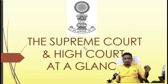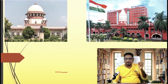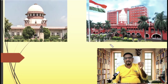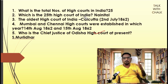As you can see the headline: today we discuss the Supreme Court and High Court at a glance. This is the logo of our judiciary, an image of the Supreme Court of India in Delhi, and the High Court of Odisha in Cuttack. First question: what is the total number of High Courts in India? It is 25.